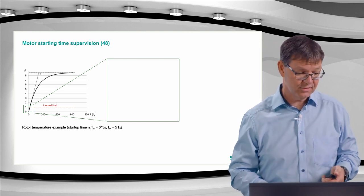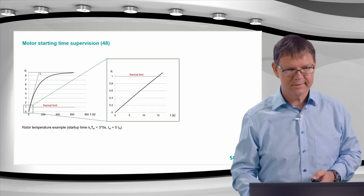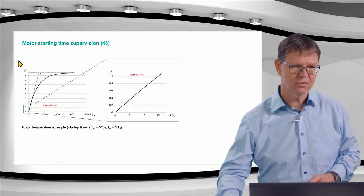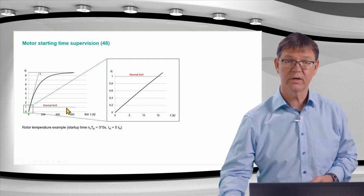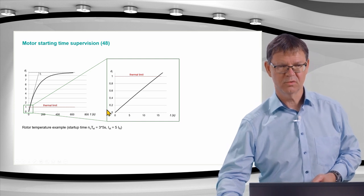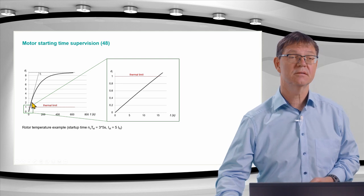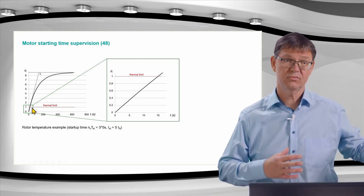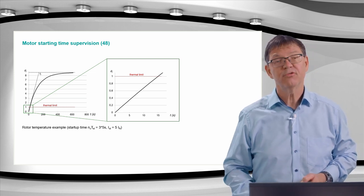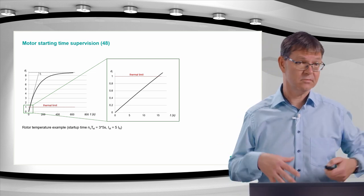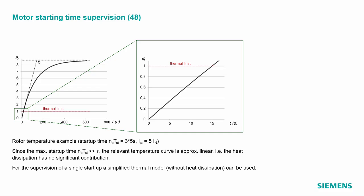I put this here to show an interesting part. The temperature between zero and one — if we zoom in, we see this is almost a straight line. That means the temperature rises so fast that the heat dissipation from the rotor is negligible, so we can neglect it. Therefore we can use a simplified thermal model, which we see on the next page.